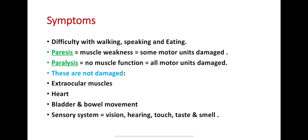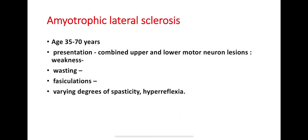We are going to discuss hyperreflexia and hypertonia — signs of upper motor neuron lesions — alongside hypotonia, which is a lower motor neuron sign. In the case presentation, the typical age of onset is around 35 to 70 years, and weakness is the cardinal presenting complaint.